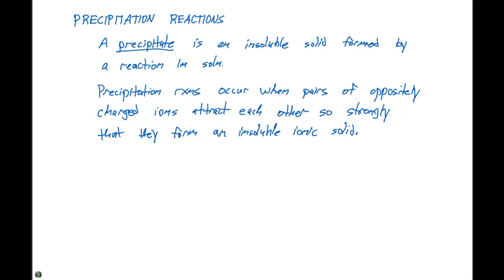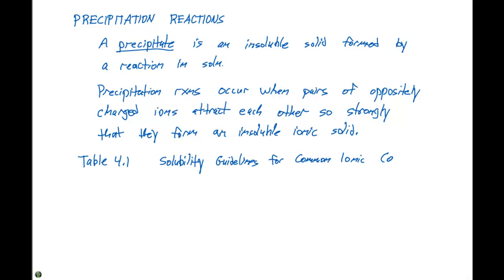If you're really thinking like a chemist, you'd want to know when these reactions would occur, and more importantly, how could you predict if they were going to occur. Chemists way back in the day performed hundreds of experiments, diligently wrote down the results in their lab notebooks, and summarized the results in a table that we can find in our textbook. If you look at table 4.1, it's titled solubility guidelines for common ionic compounds in water. This table is also referred to as solubility rules.